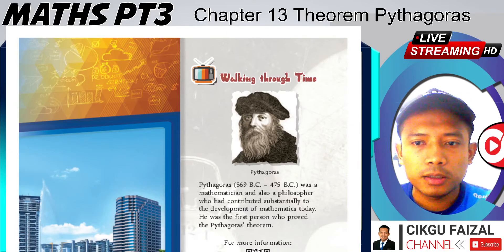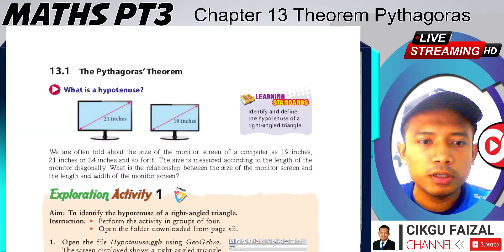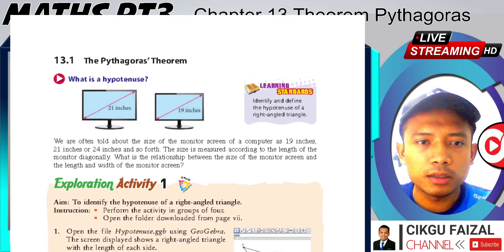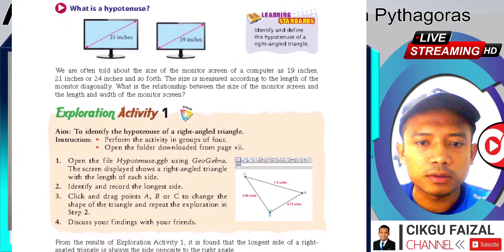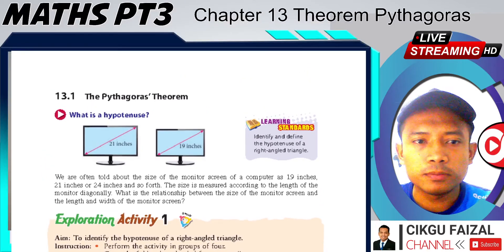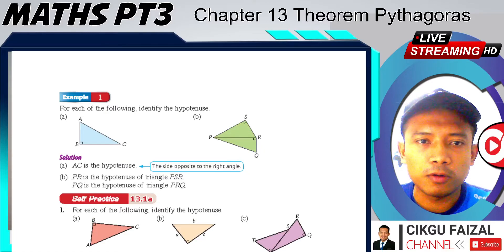So, we look at the content for today. What you're going to learn is to find out the hypotenuse sides for the right-angled triangle — that is subtopic 13.1. For your information, this is the last topic for Form 1.